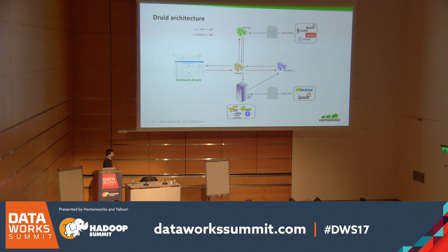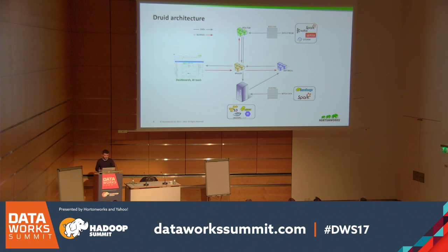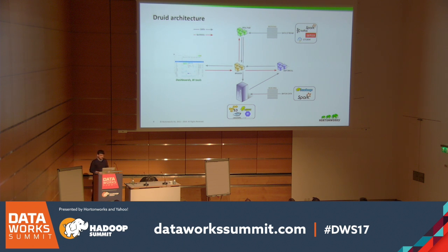Let's start with the indexing. When you want to index data you can do it in batch or in real-time. For real-time, you have your streaming system — Kafka, Storm — and the real-time nodes read data from the streams and create segments that are pushed to deep storage after a certain period of time. Druid supports several deep storage systems: S3, HDFS, Google, and so on.